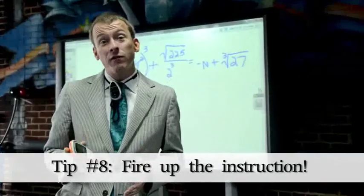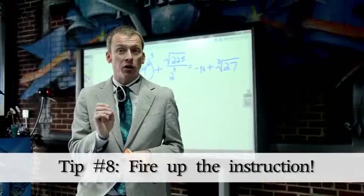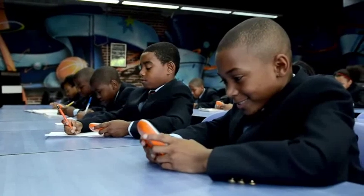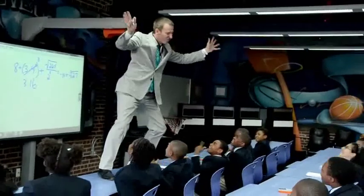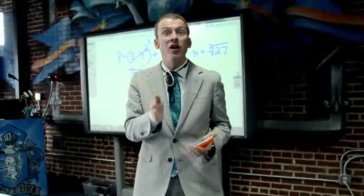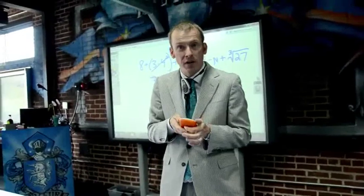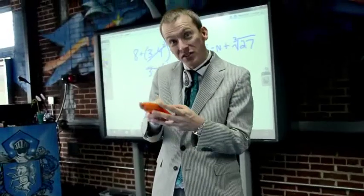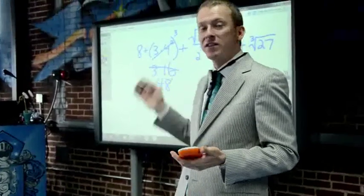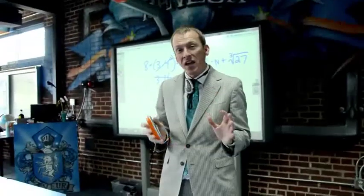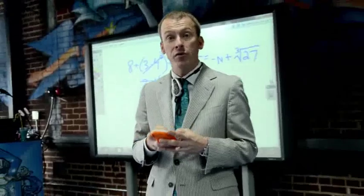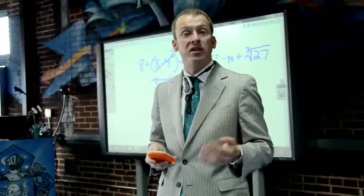Tip number eight involves using the active expression as part of the instruction and not in addition to the instruction. You really want the active expression to be a real integral part of the lesson. For example, I may be teaching one of these great long algebra problems with my class, get them to a certain point, and then stop and say, now it's on you — it's your turn to finish this problem. I will have previously entered a series of steps in the active expression that the students will then have to complete in order to solve this algebra problem successfully. It's a real part of the instruction and a valuable piece to get the kids to know they can complete the problems on their own.